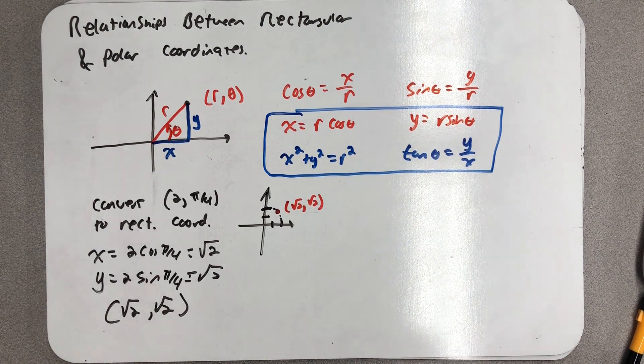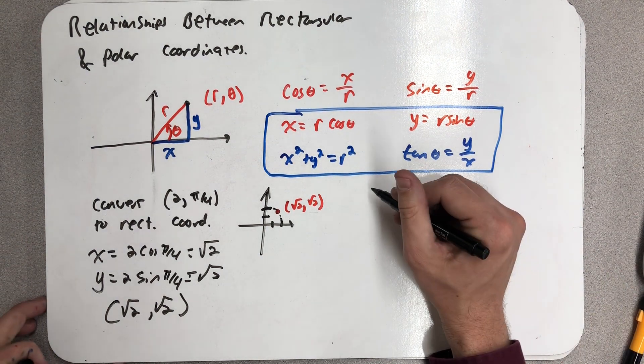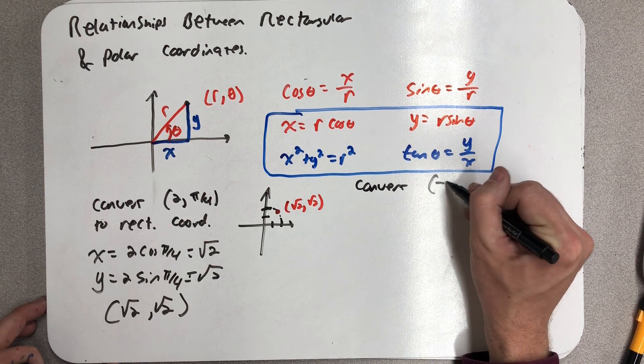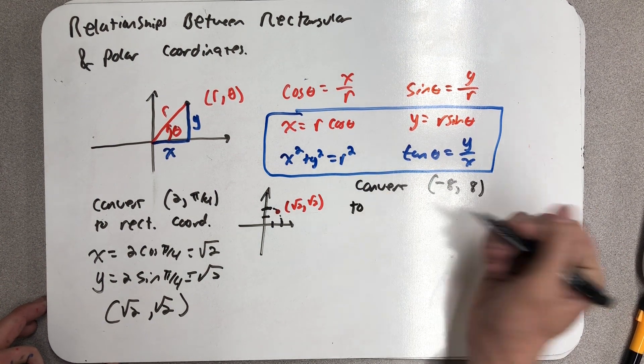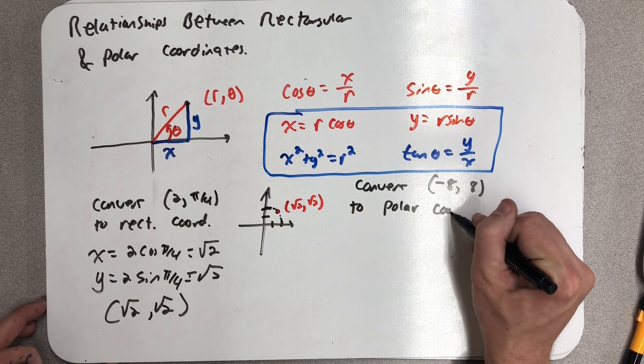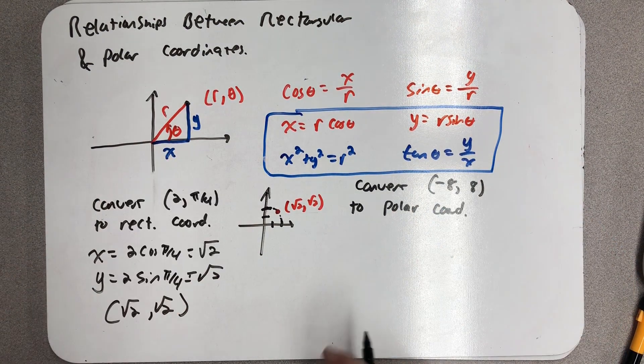Well, let's do a quick example of converting a rectangular point to polar coordinates. I need an r and a θ. I'm going to use these bottom two relationships.